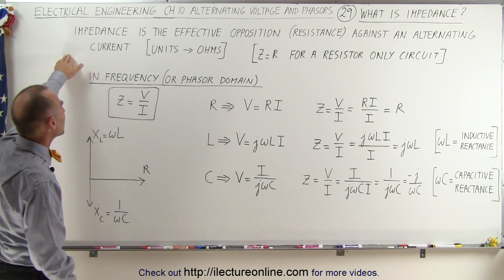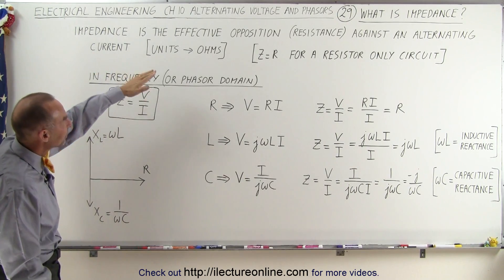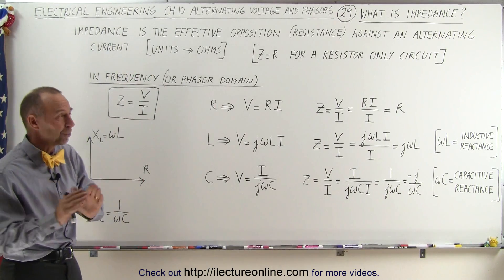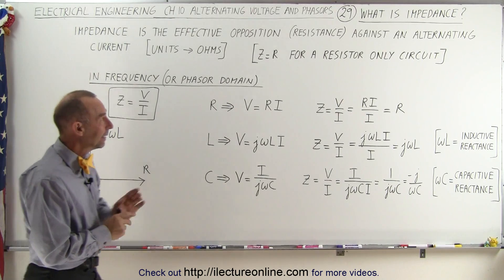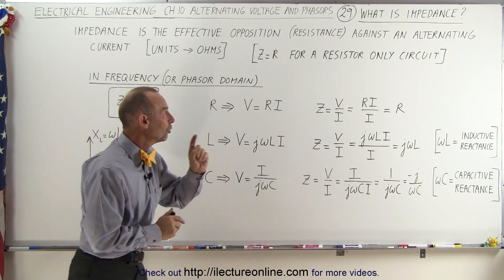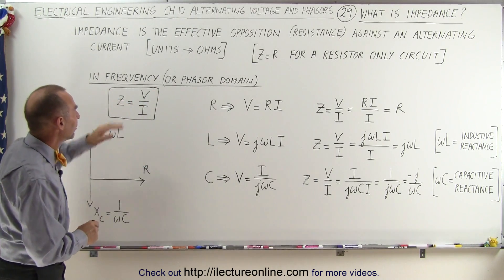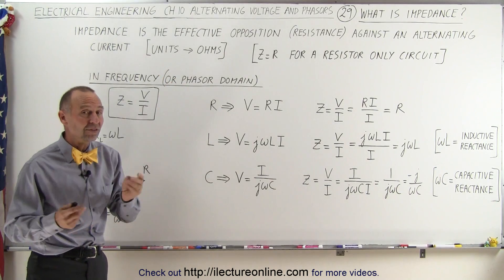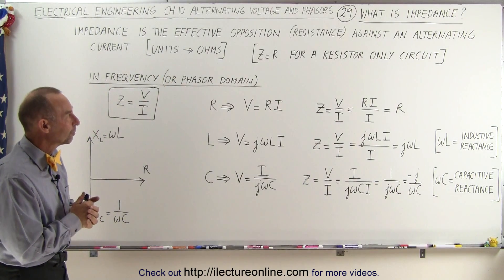So a good definition would be that impedance is the effect of opposition — it's kind of like resistance, not quite the same — against an alternating current. The units are exactly the same as resistance; they are also in ohms.